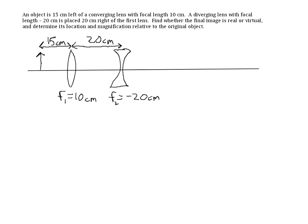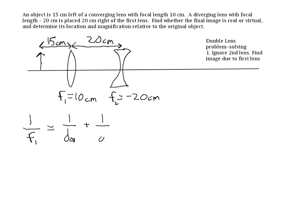To find the image due to the first lens, we use the lens equation: one over the focal length equals one over the object distance plus one over the image distance. So we write: 1/F1 = 1/DO1 + 1/DI1. The focal length of the first lens is 10 centimeters, and the object distance to the first lens is 15 centimeters. We are solving for DI1.